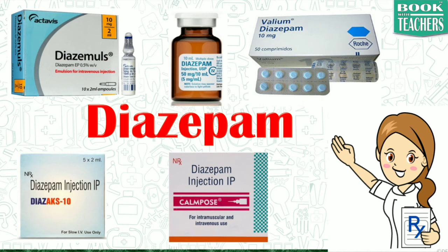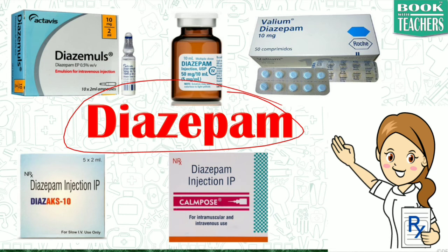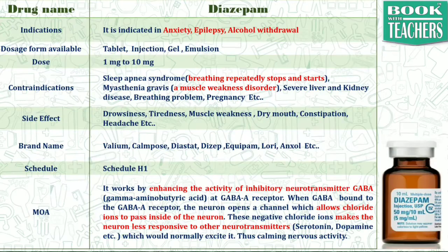Hello students. Today's daily drug concept covers a drug called Diazepam, which belongs to the category of anti-convulsant drugs. Diazepam is indicated in anxiety, epilepsy, and alcohol withdrawal symptoms, when the neurons get hyperactively activated in the body.